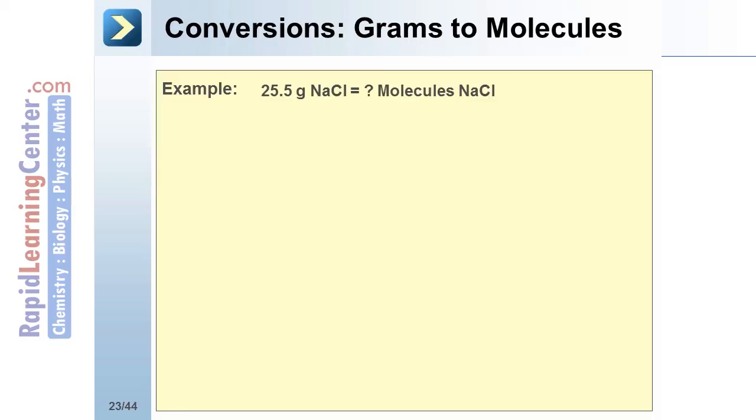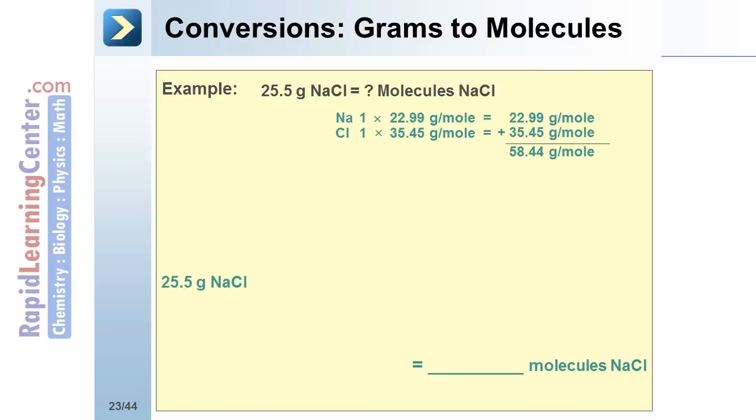This example asks you to convert from grams to molecules. The first definition needed is the molecular mass. This will give the definition between grams and moles. Next, Avogadro's number is needed to convert between moles and molecules.